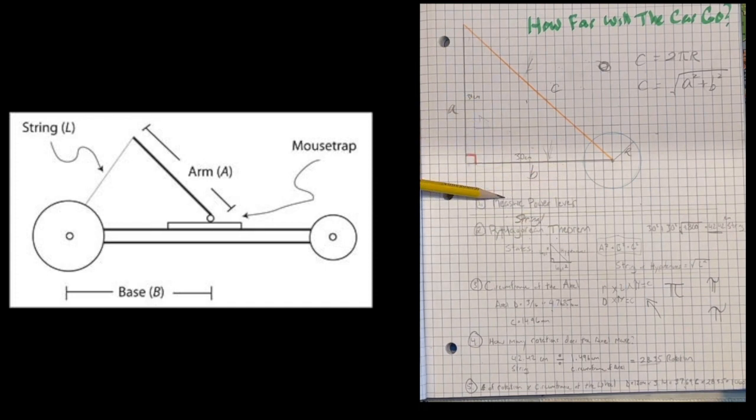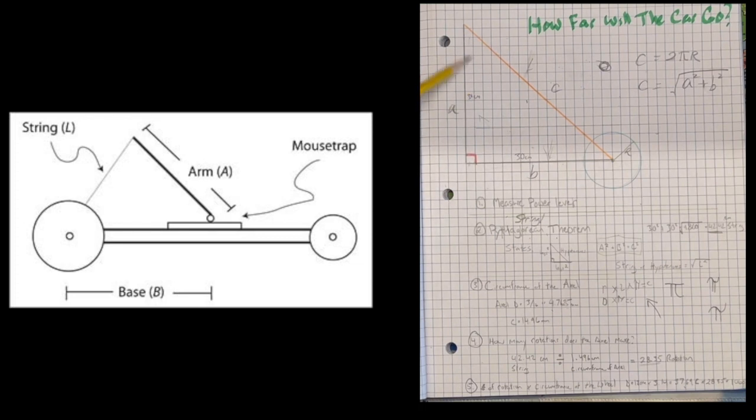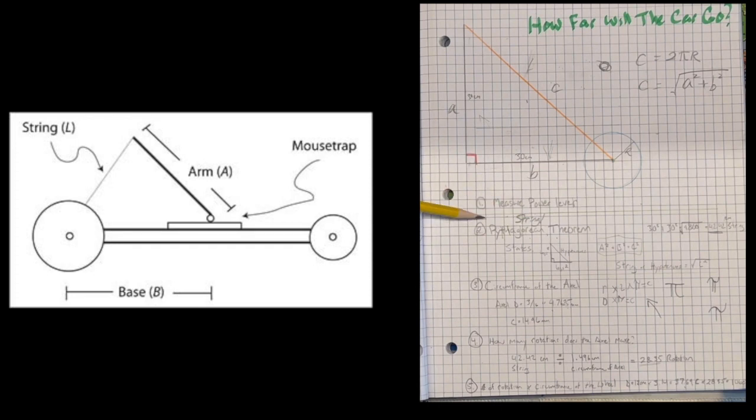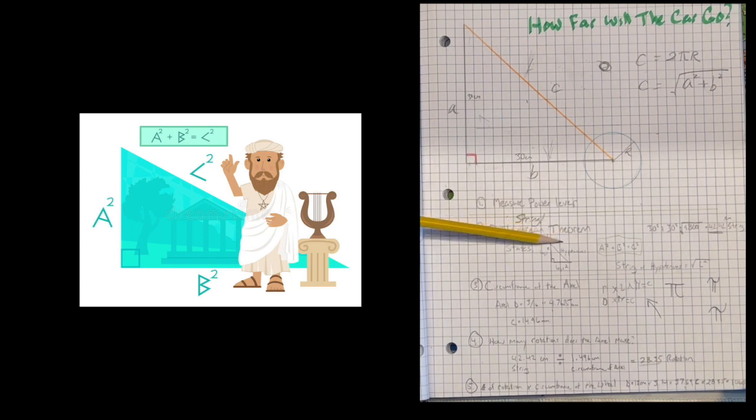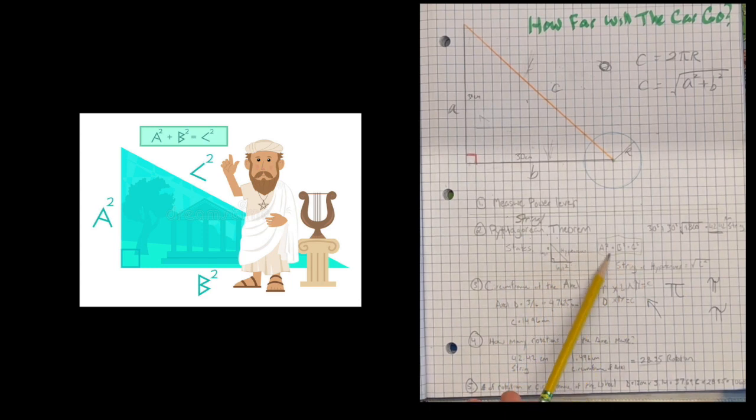Now we need to find C, which is the hypotenuse or string. We're going to use the Pythagorean Theorem, which states that the two legs A and B squared equals C squared, the hypotenuse or string.